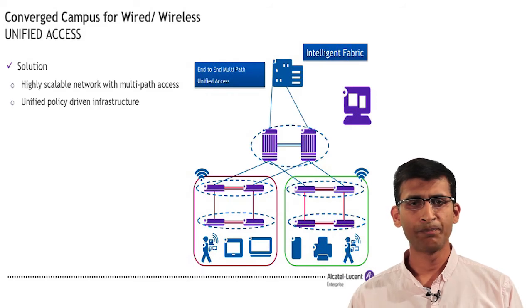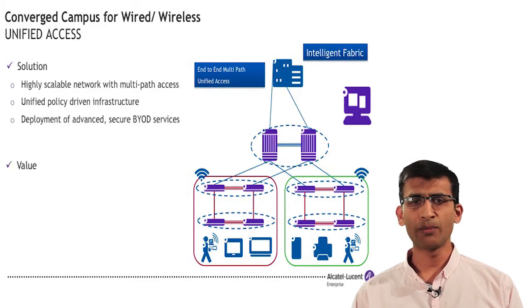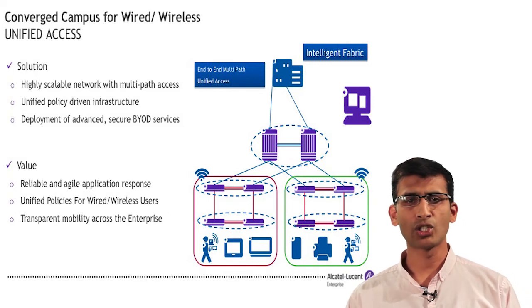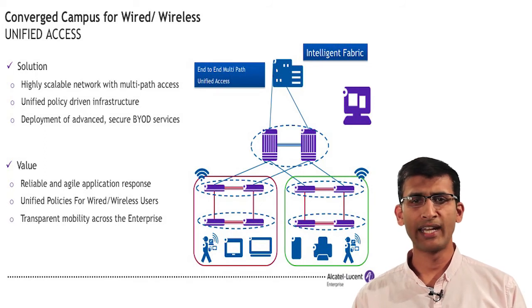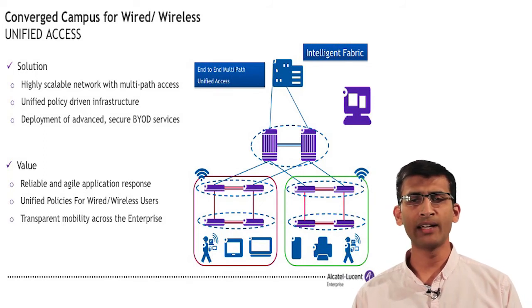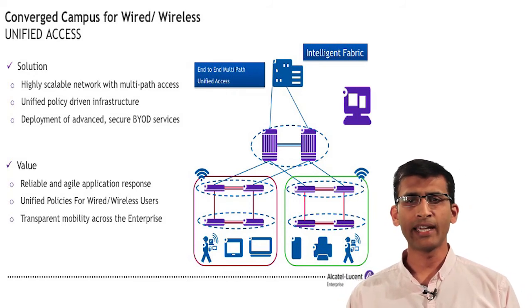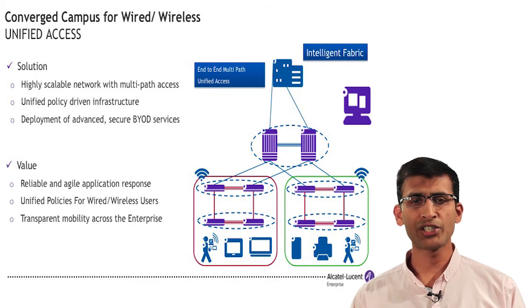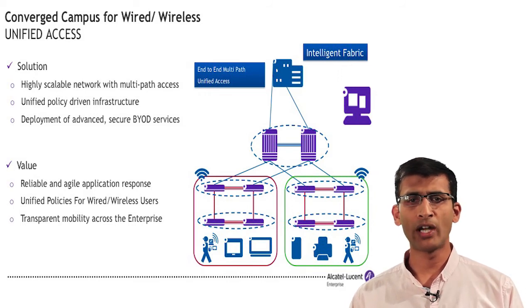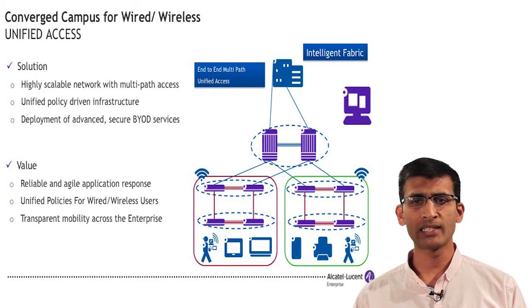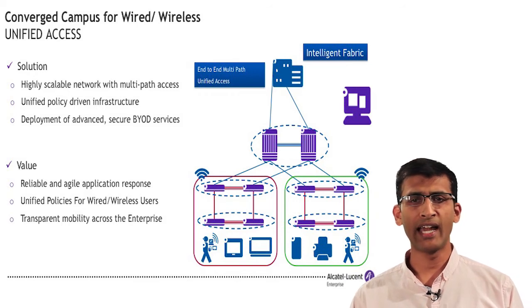Let us look at a few solutions. The OmniSwitch 9000E product family provides enhanced unified access features for converged campus network solutions with simplified network architecture, automated controls and enhanced security for both wired and wireless users. It provides application specific policy integration for efficient SIP, VDI, and Bonjour application delivery. With deployment of advanced secure BYOD services, it enables transparent mobility across the enterprise with zero touch onboarding and profiling.